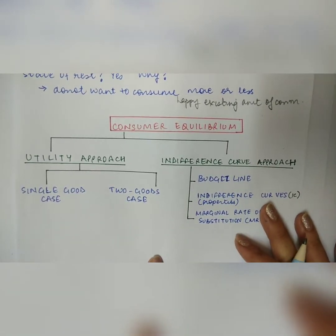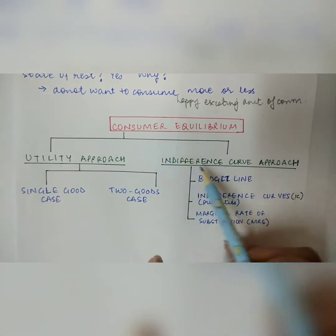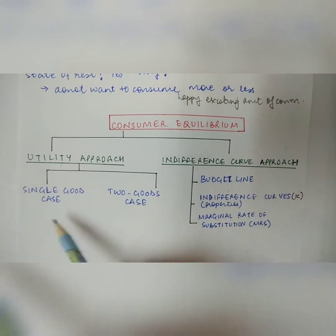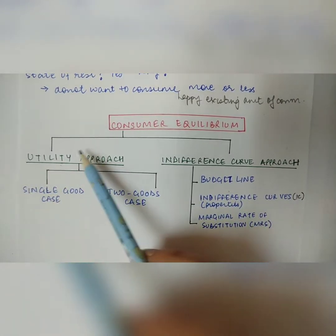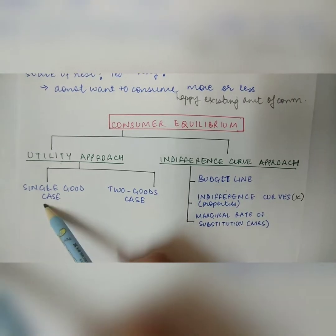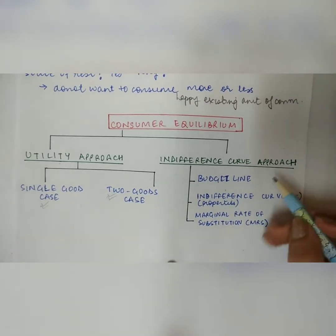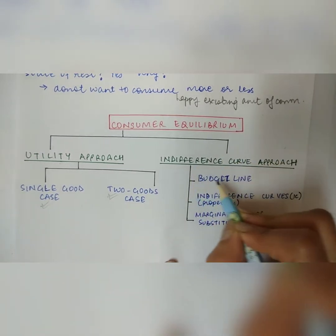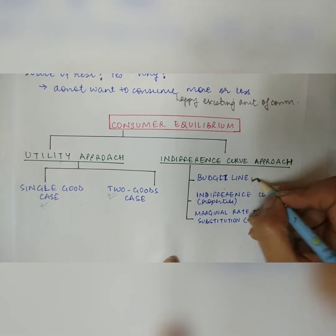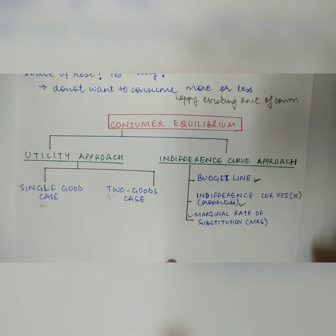When we talk of consumer equilibrium, there are two alternative approaches: one is the utility approach and the other is the indifference curve approach. We shall first discuss the utility approach through which you can attain consumer equilibrium — the single good case and the two good case in the next lecture. In subsequent lectures, we will discuss the indifference curve approach, for which we will need to understand the concept of the budget line, indifference curves, their properties, and the marginal rate of substitution.